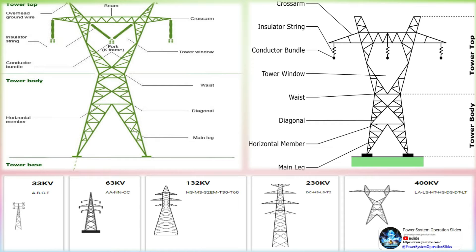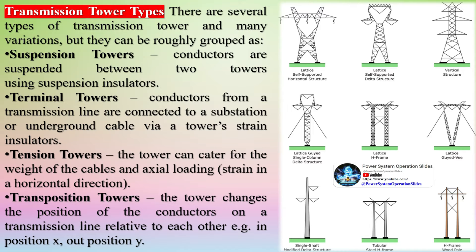Tension towers can cater for the weight of the cables and axial loading strain in a horizontal direction. Transposition towers change the position of the conductors on a transmission line relative to each other — for example, from position X to position Y.